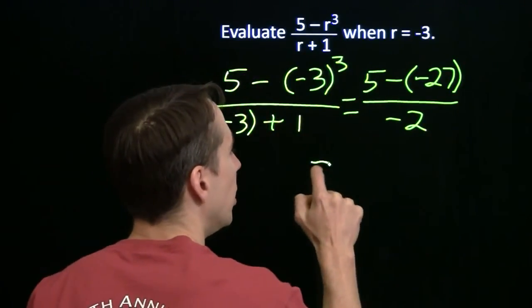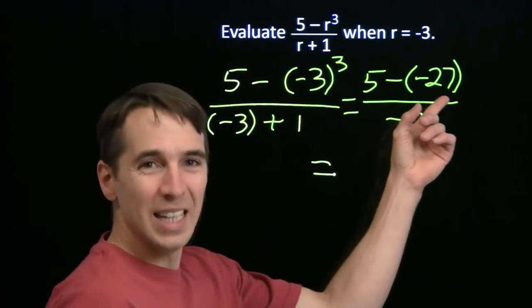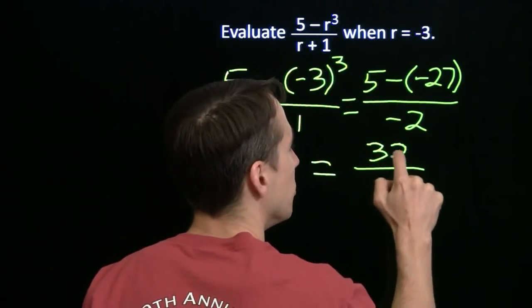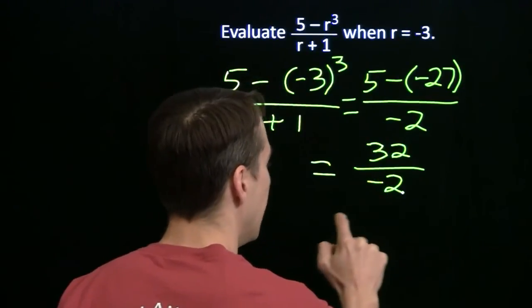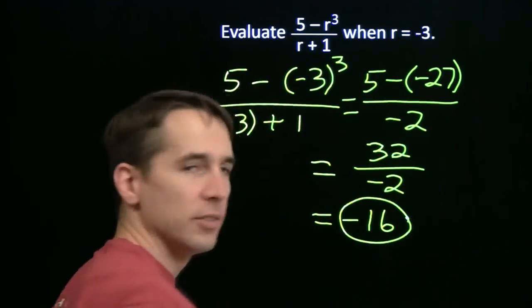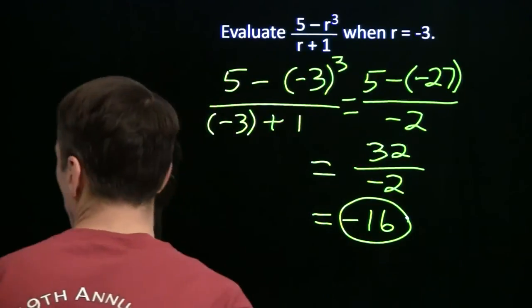Now up here in the numerator, I have 5 minus a negative 27, that's 5 plus 27, which gives me 32, and I'm still dividing by negative 2, and that gives me negative 16. Let's try one more.